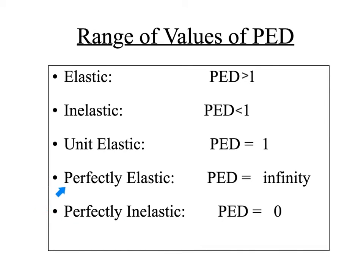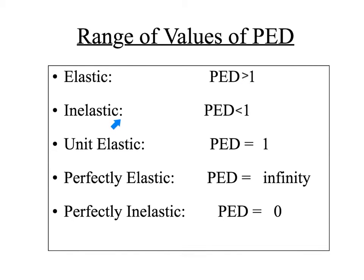If you look at these, the ranges of elasticity go from zero to infinity. The range that we usually operate in is somewhere between zero and ten at the most. So elastic means the price elasticity of demand is greater than one. Inelastic means the price elasticity of demand is less than one. We say it has unit elasticity or is unit elastic if the price elasticity of demand equals one.